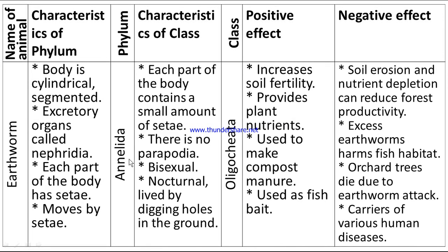The last animal is the earthworm. Characteristics of the phylum: body is cylindrical and segmented, excretory organs called nephridia, each segment of the body has setae. The phylum is Annelida. Characteristics of class: each segment contains a small number of setae, no parapodia, bisexual, lives by digging holes in the ground. The class is Oligochaeta.